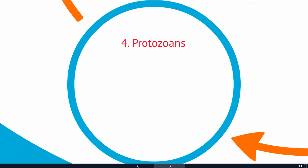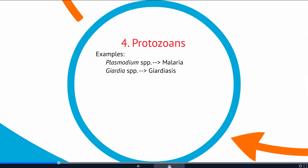There are also protozoans that are pathogens. Here are two examples: the organism that causes malaria is a protozoan, and the organism that causes giardia, often known as the backpacker's disease, also comes from a protozoan. These are single-celled eukaryotic organisms. They're almost always found in water, although the plasmodium is found in blood, so some sort of liquid. These are cells that basically consume and kill our cells.